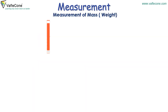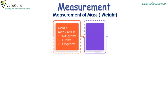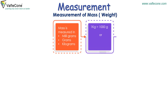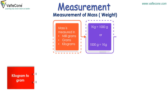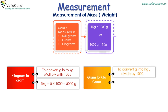Measurement of mass. Mass is measured in milligrams, grams, and kilograms. 1 kg is equal to 1000 grams, or 1000 grams is equal to 1 kg. To convert kilogram into gram, multiply by 1000. For example, 5 kg is equal to 5 into 1000, which equals 5000 grams. To convert gram into kilogram, divide by 1000. For example, 5 grams is equal to 5 divided by 1000, which equals 0.005 kilograms.